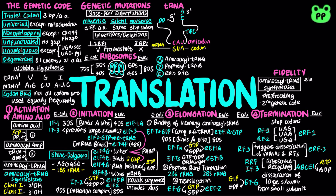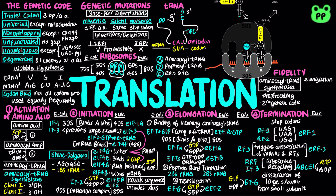During elongation, elongation factor EF-Tu in bacteria and eukaryotic elongation factor 1A, which catalyze the binding of incoming aminoacyl tRNA, proofread codon and anticodon interactions. Incorrect aminoacyl tRNAs dissociate from the A site.